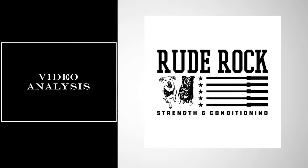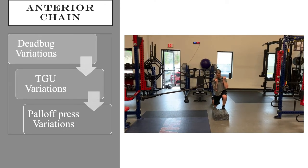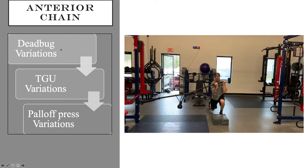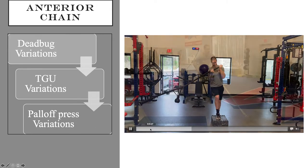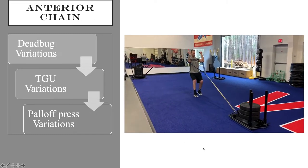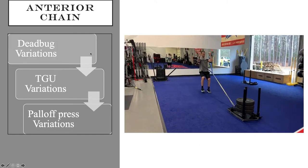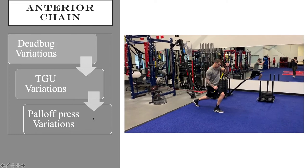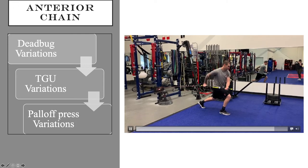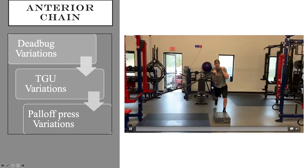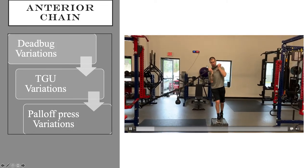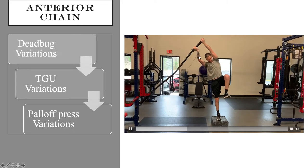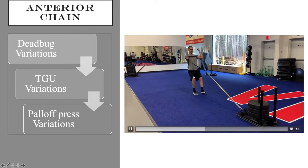Now let's look at some video analysis, grouped by chain. For the anterior chain, basics include dead bug variations, Turkish get-up variations, and Pallof presses. When thinking about the anterior sling, the dead bug is the gold standard. On the anterior chain we're thinking serratus, adductor, and some oblique. Look at the elbow and wrist on the inside hand here — I can't fully extend that elbow or wrist. No history of shoulder injury, but my anterior chain is just kind of locked up. That's a good example of what you don't want to see.